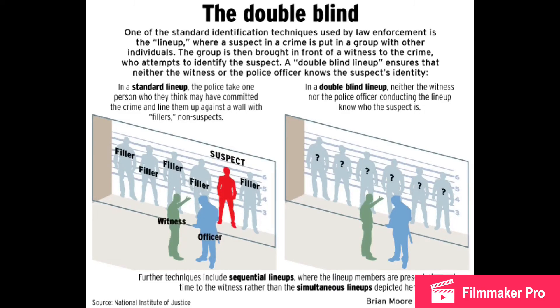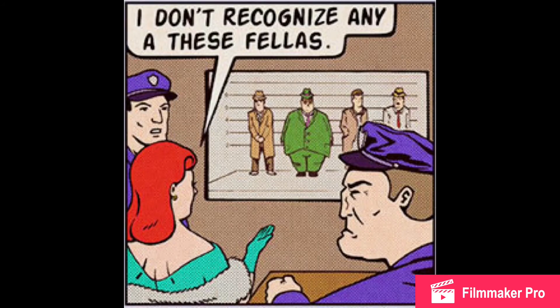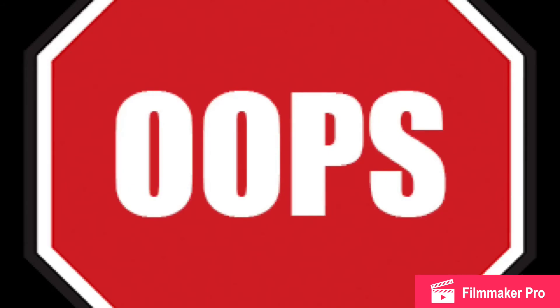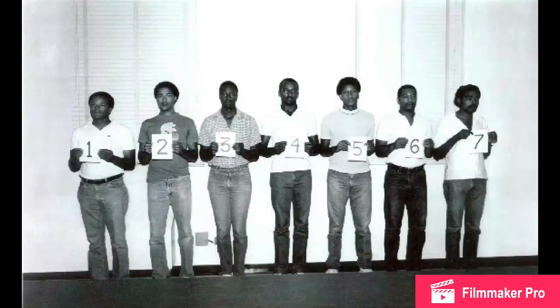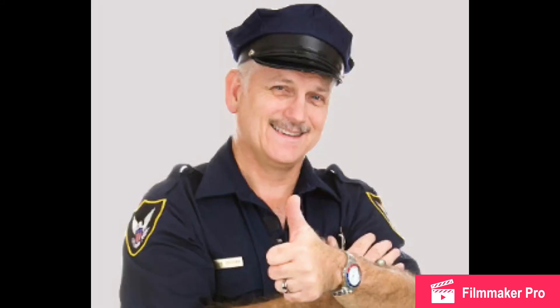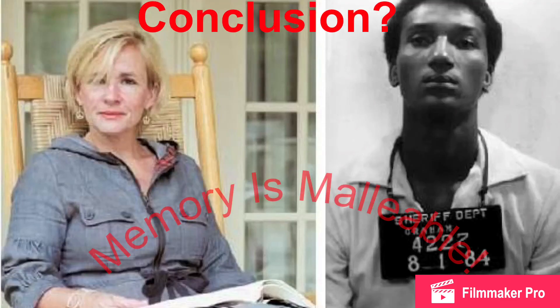However, there is a way to try to combat eyewitness misidentification. A double-blind sequential photo array is an extremely progressive technique, meaning neither the person showing the lineup nor the witness knows which picture is the real suspect. So the police have no effect on who the witness identifies. In the case of Ronald Cotton, it is believed that the police played a part in who the victim identified as the suspect. She identified Ronald as the suspect in the photo lineup, and he was the only person from the photo lineup that was in the police lineup. After the victim identified him as the suspect for a second time, the police confirmed with her that she had chosen the same person twice, reinforcing her confidence and sending an innocent man to jail.